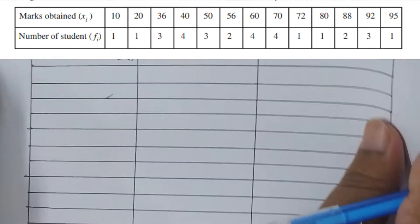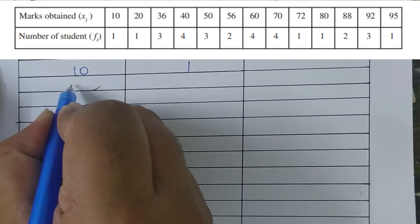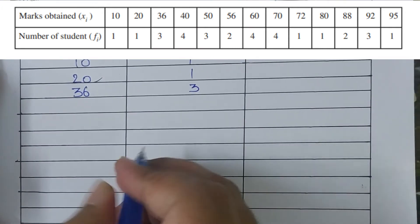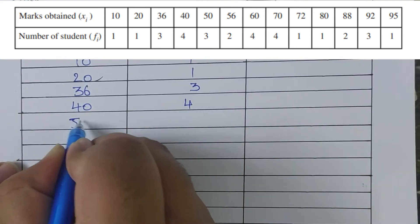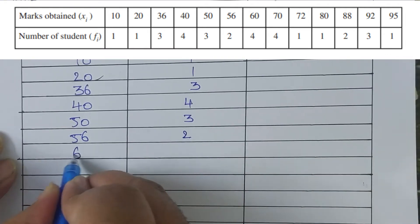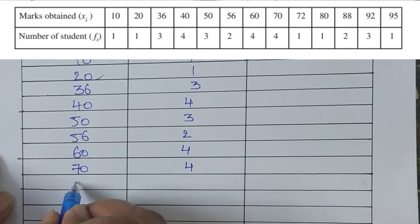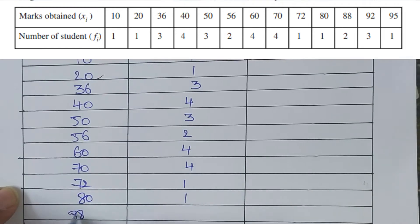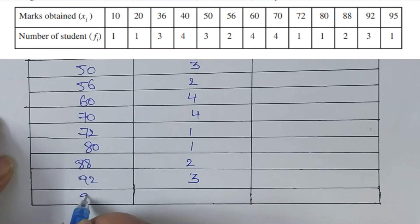Reading the data from the table: 20 marks — 1 student; 36 marks — 3 students; 40 marks — 4 students; 50 marks — 3 students; 56 marks — 2 students; 60 marks — 4 students; 70 marks — 4 students; 72 marks — 1 student; 80 marks — 1 student; 88 marks — 2 students; 92 marks — 3 students; 95 marks — 1 student.